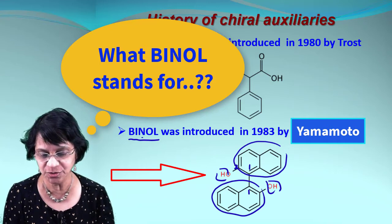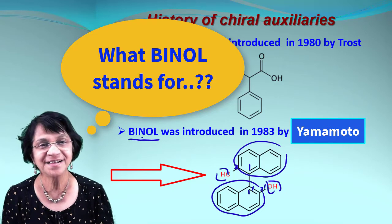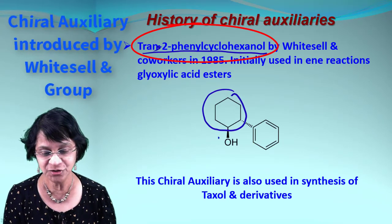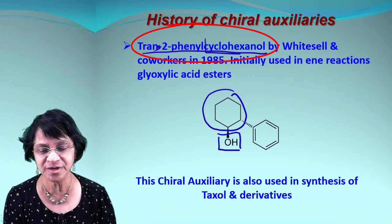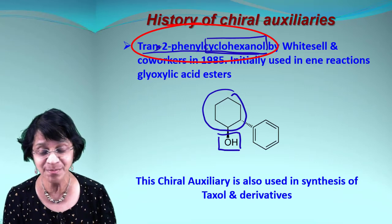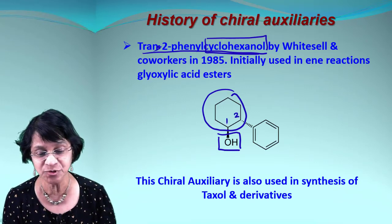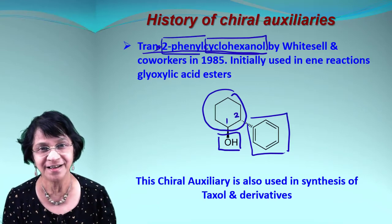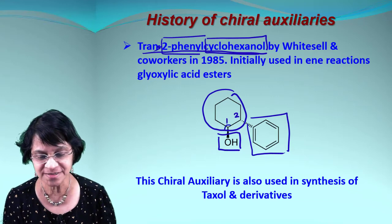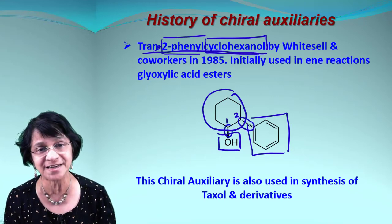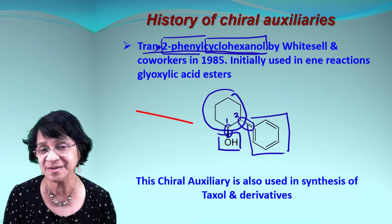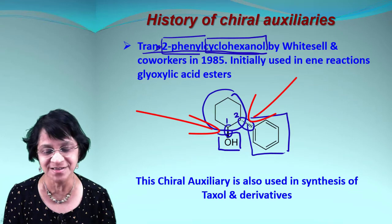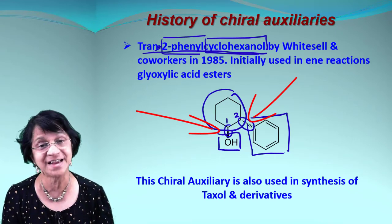So BINOL is 1,1'-binaphthalene-2,2'-diol. Now looking at another structure: we have a cyclohexane ring with an OH group — that's cyclohexanol — and the numbering begins at position one. At position two we have a phenyl group, giving us 2-phenylcyclohexanol. The word 'trans' refers to the fact that the substituents OH and phenyl are in exactly opposite geometrical positions.